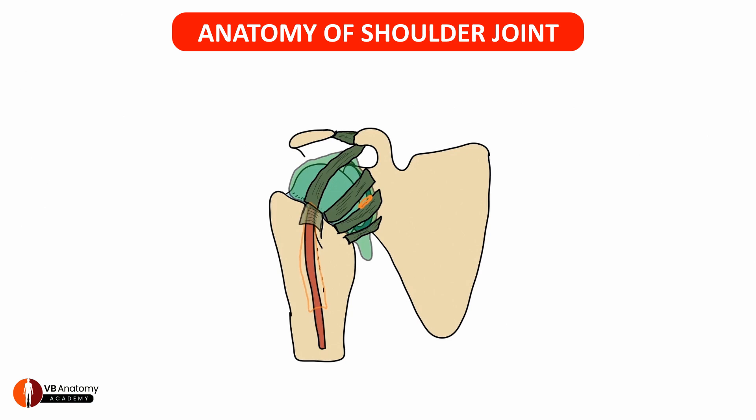Let's now revise quickly. The shoulder joint is formed by the articulation of the head of humerus with the shallow glenoid cavity. The glenoid cavity is deepened by a glenoid labrum on the outside. Superiorly, there is a supraglenoid tubercle that gives attachment to the long head of biceps brachii. The capsule of shoulder joint is attached in such a way that it includes the labrum and the long head of biceps within it, making the long head of biceps an intracapsular tendon.